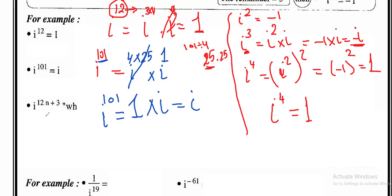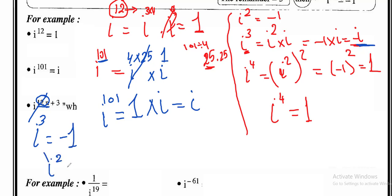Let's take another example: i^(12+3). i¹² is a multiple of 4, so it equals 1. I still have i³. i³ = i² × i. Since i² = -1, then -1 × i = -i. So i³ = -i.